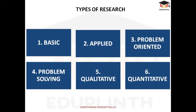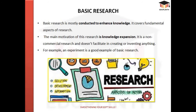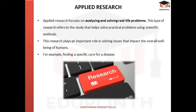Talking about the types of research, we can broadly classify them into six types: basic, applied, problem-oriented, problem-solving, qualitative, and quantitative. Basic research is mainly conducted to enhance knowledge — it covers the fundamental aspects of research, and the main motivation is knowledge expansion. It is non-commercial; an experiment is a good example of basic research.